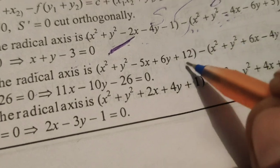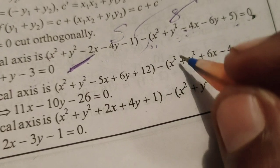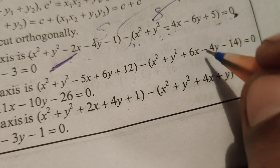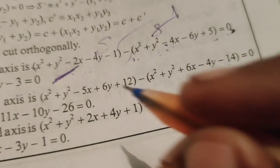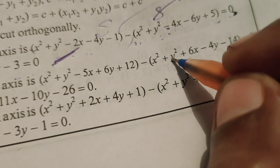equals to 0. In these given two circle equations,